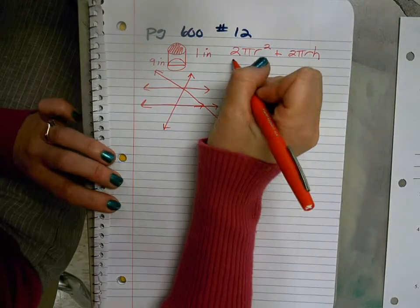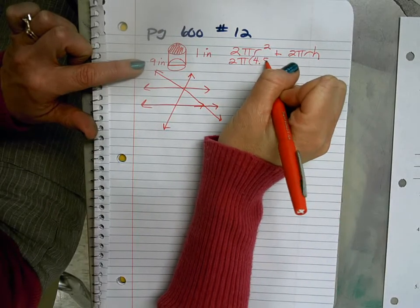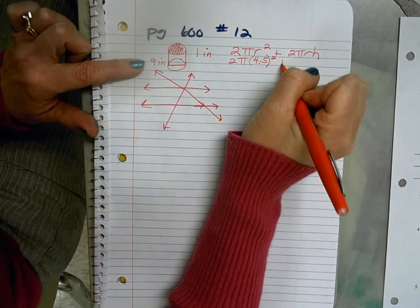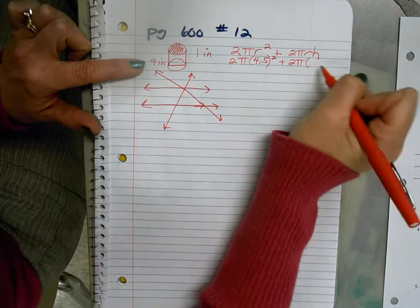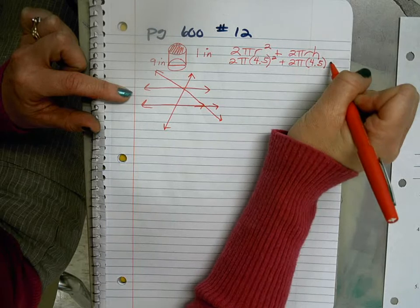And now I can substitute. I have 2πr², if the diameter is 9, half of that is 4.5, and then I'll square it. Plus 2πr times my height. So 2 times π times 4.5 times 1.